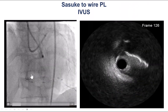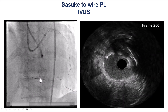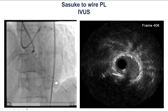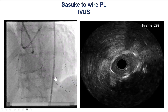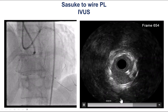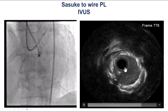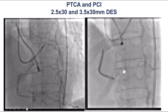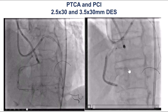We wanted to secure the posterolateral, so we used a dual-lumen Sasuke microcatheter and were able to advance a guide wire into the posterolateral. After probing attempts from different vessels, we did intravascular ultrasound. It turned out there was an old stent in the right coronary artery, which was hard to see given all the calcium.